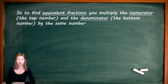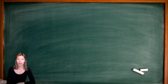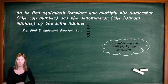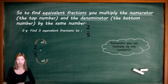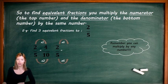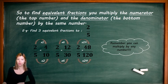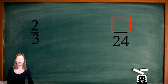So to find an equivalent fraction, you multiply the numerator — the top number — and the denominator — the bottom number — by the same number. Remember, to find equivalent fractions you can multiply by any number you want. So we can multiply 2 over 5 by 2: 2 times 2 is 4, 5 times 2 is 10, giving us an equivalent fraction of 4 over 10. We could have multiplied by 6: 2 times 6 is 12, 5 times 6 is 30. Or even by 24: 2 times 24 is 48 and 5 times 24 is 120. As long as whatever you do to the top, you do to the bottom.